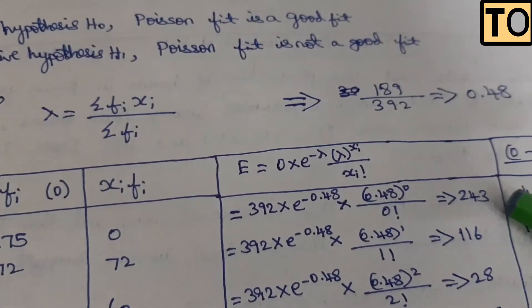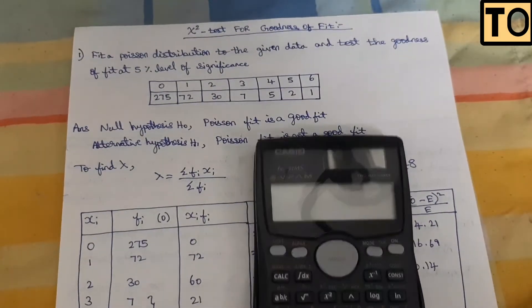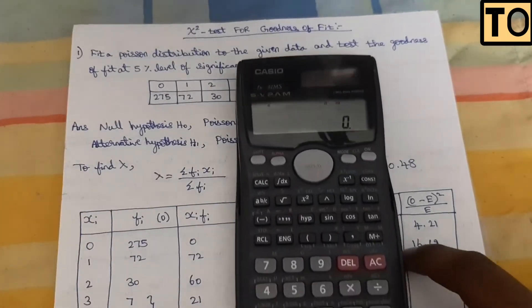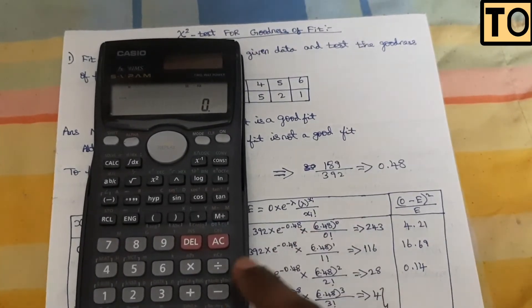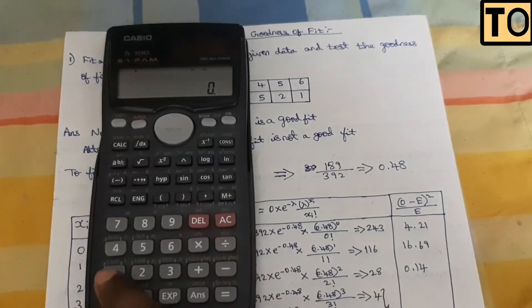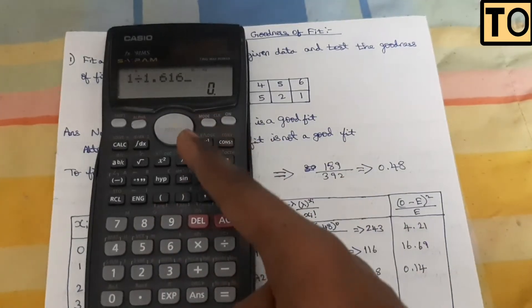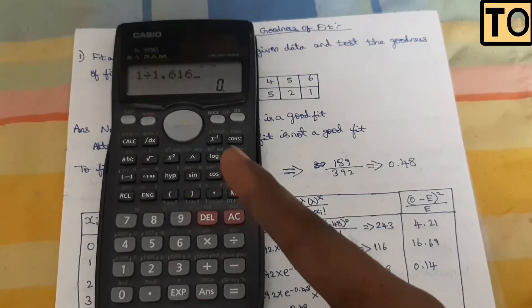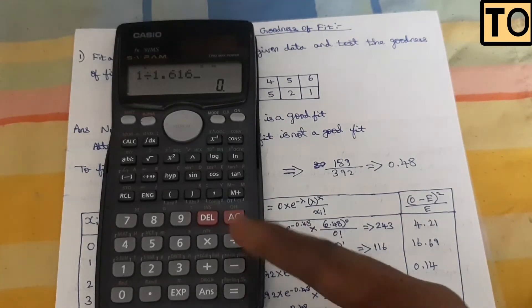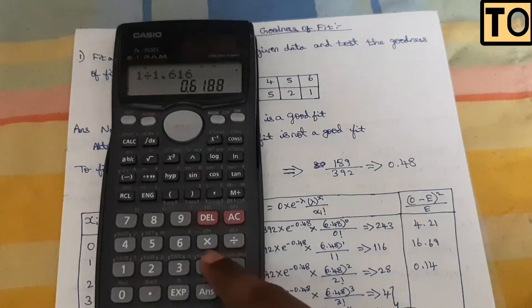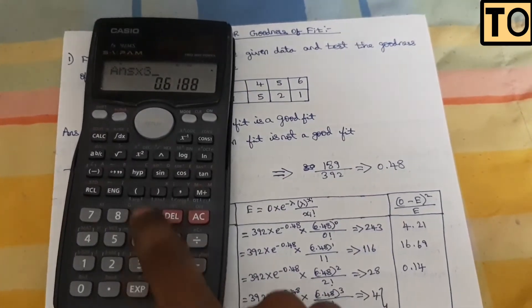Using these values, for X equals 0: the expected frequency calculation gives 1 divided by 1.616 times 392, which equals approximately 242.57 — so roughly 243. You can see the table on screen showing these expected frequency values being filled in row by row.